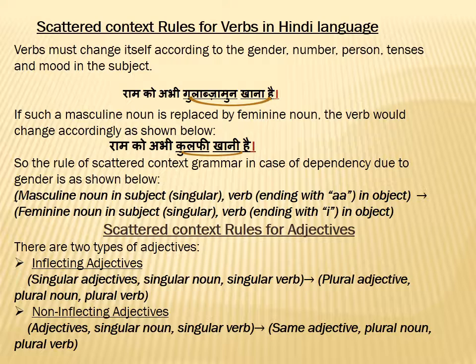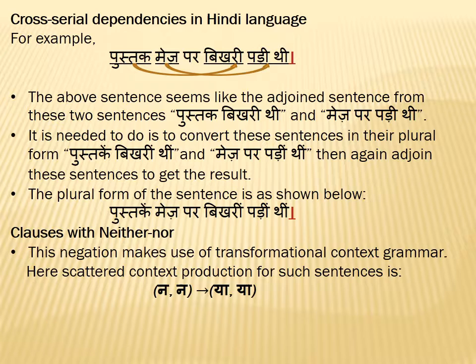Next are the scattered context rules for adjectives. There are two types of adjectives: inflecting adjectives and non-inflecting adjectives, and the rules are as described below.